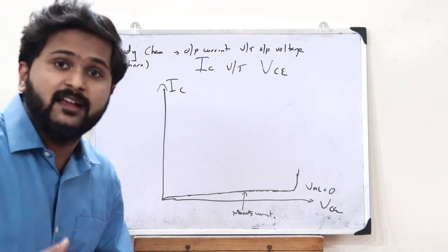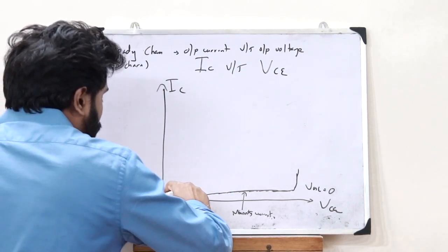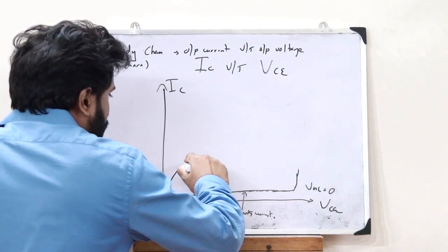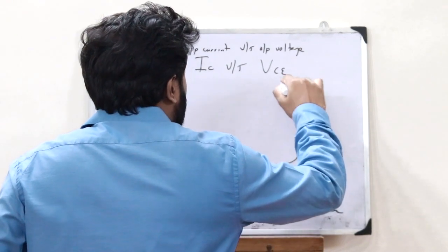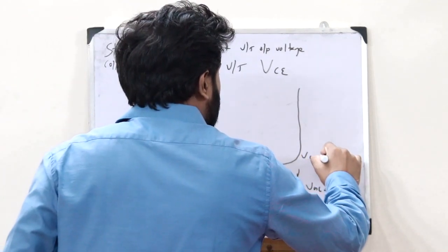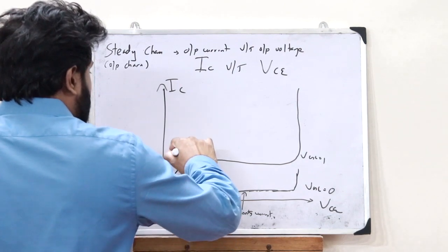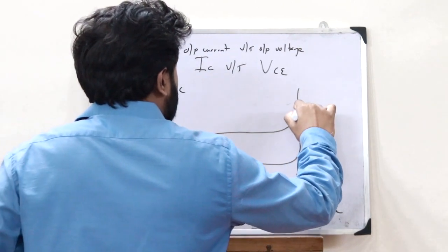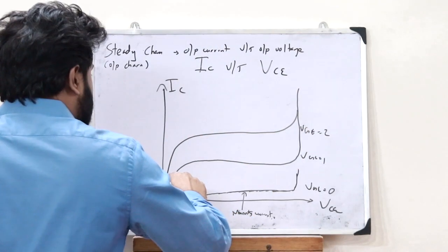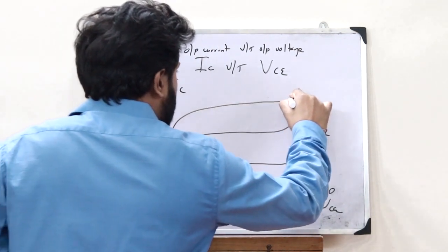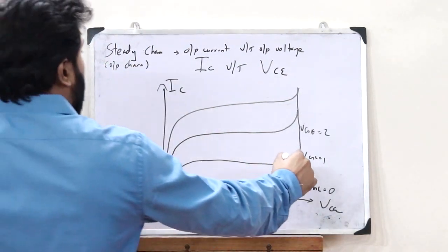Now taking VGE equal to 1, an actual flow of current is observed, and when it reaches a certain point, saturation happens. Similarly for VGE equal to 2, the same pattern occurs, and for VGE equal to 3, the same thing happens again. This continues for many values of VGE, producing a family of output characteristic curves.